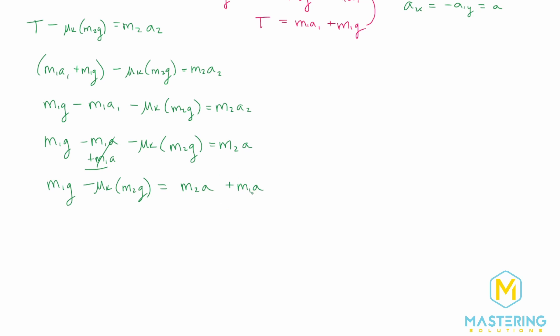We need to do this because we're trying to solve for the acceleration. So now we need all the accelerations on the same side so that we can factor this out. So we have m1 g minus mu sub k times m2 g is equal to acceleration times m2 plus m1. And now we'll divide both sides by m2 plus m1 to isolate acceleration.